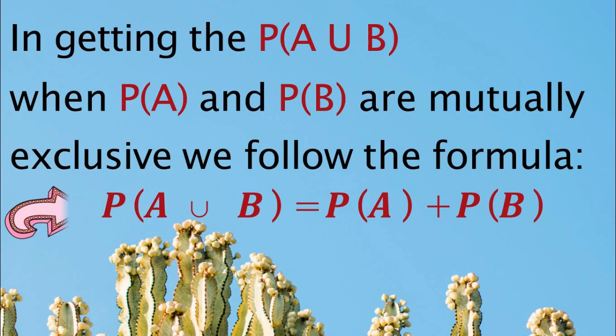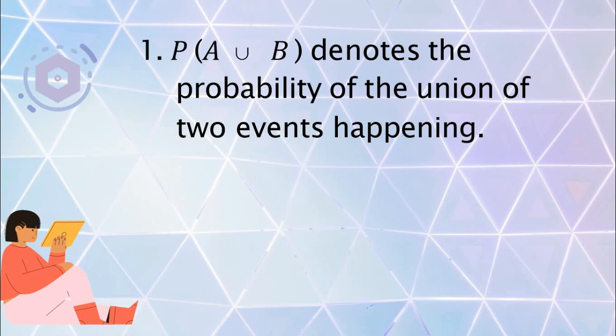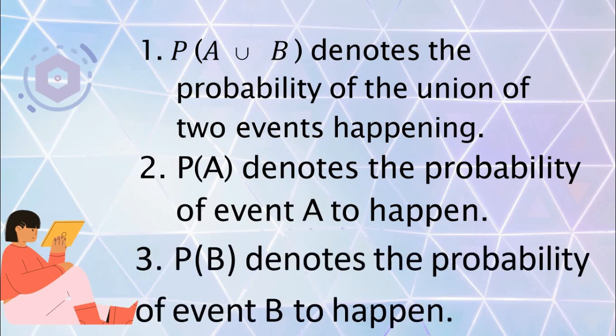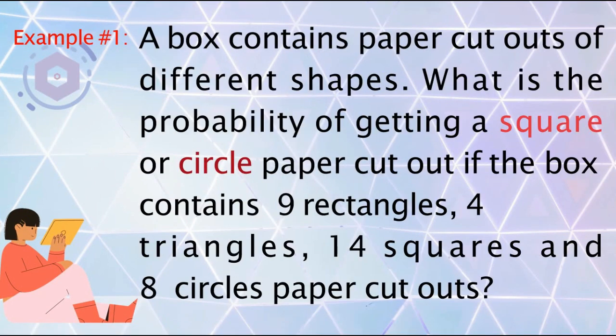P(A∪B) is equal to P(A) plus P(B). Take note of those symbols: P(A∪B) denotes the probability of the union of two events happening, P(A) denotes the probability of event A to happen, and P(B) denotes the probability of event B to happen.